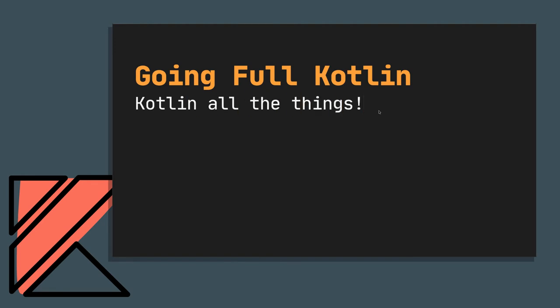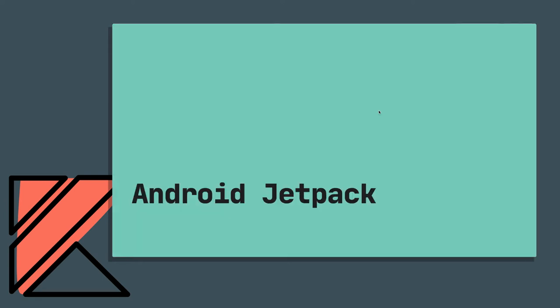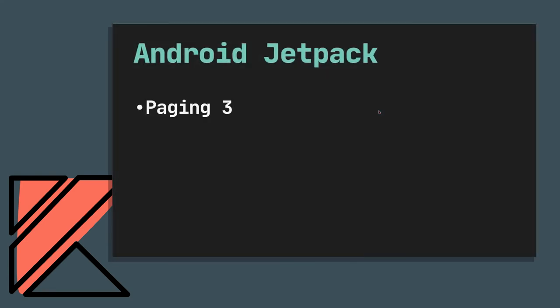Now let's look at how to go full Kotlin—how to start embracing Kotlin in more ways in your codebase. The first thing to mention is Android Jetpack, because this is really where the Kotlin First mindset started to really permeate. We're seeing big updates—paging library version 3 is written entirely in Kotlin, which is a big deal. We're now seeing Jetpack libraries written from scratch with Kotlin in mind, taking advantage of all its features. The benchmark library is also written in Kotlin, and it's significant that even tooling libraries are embracing Kotlin.